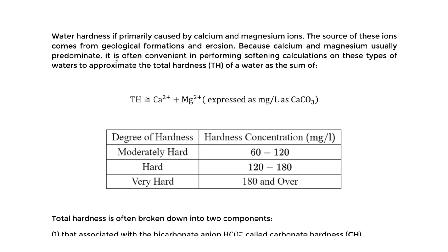Before that, I want to quickly discuss what we mean by hardness. We know it's primarily caused by the calcium and magnesium ions. The source of these ions is due to geological formation and the erosion of these formations which release these ions. These are positively charged, and calcium and magnesium usually predominate. It is convenient in performing our softening calculations — we need to find the total hardness to figure out how much lime or soda ash we need to add to soften the water and essentially eliminate that hardness.